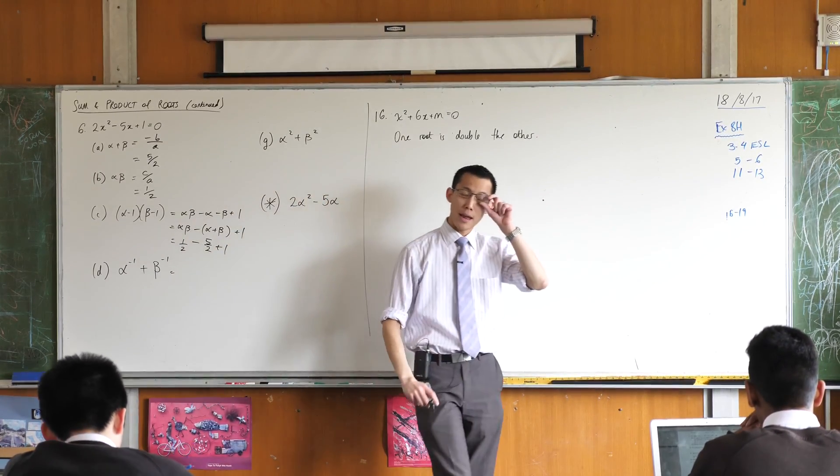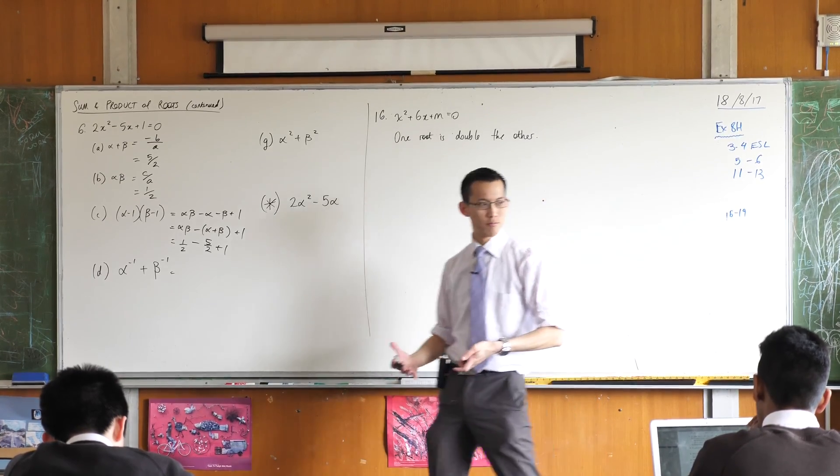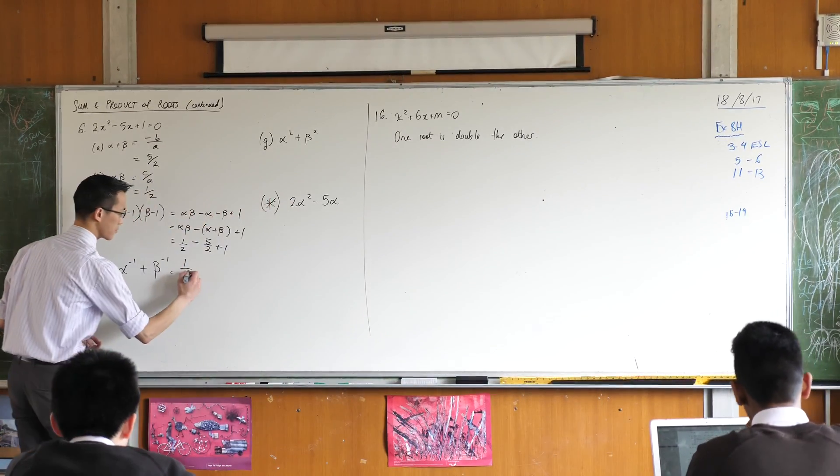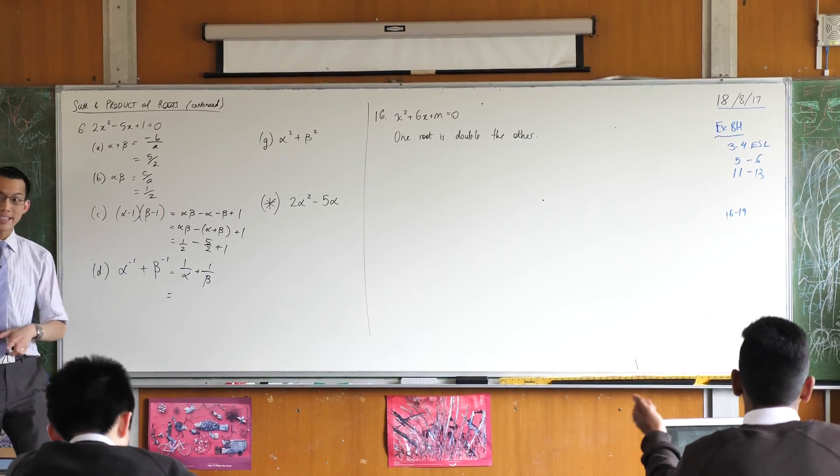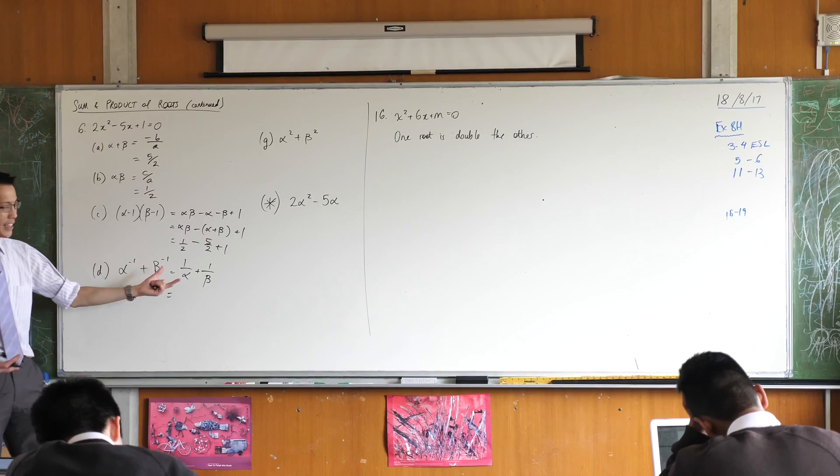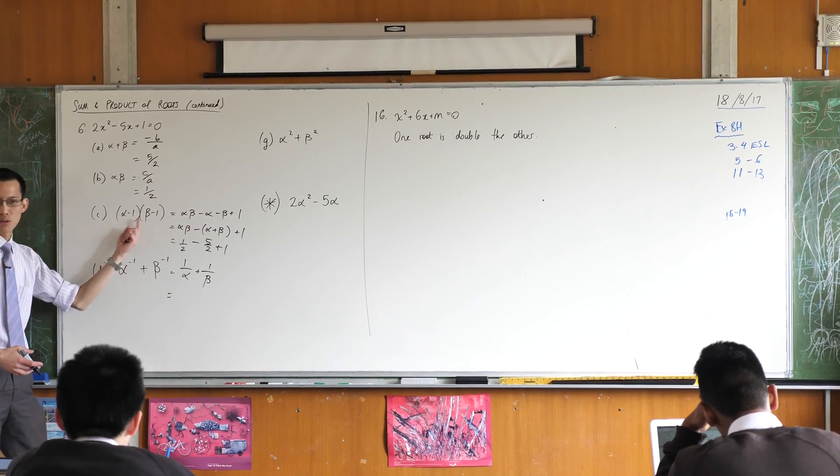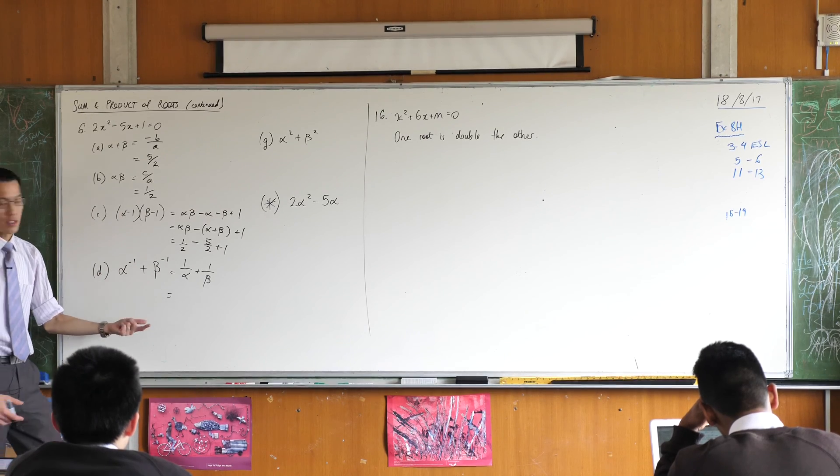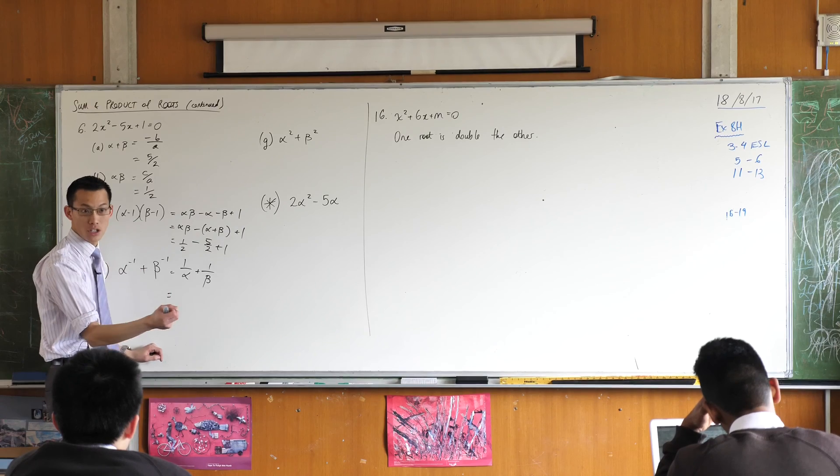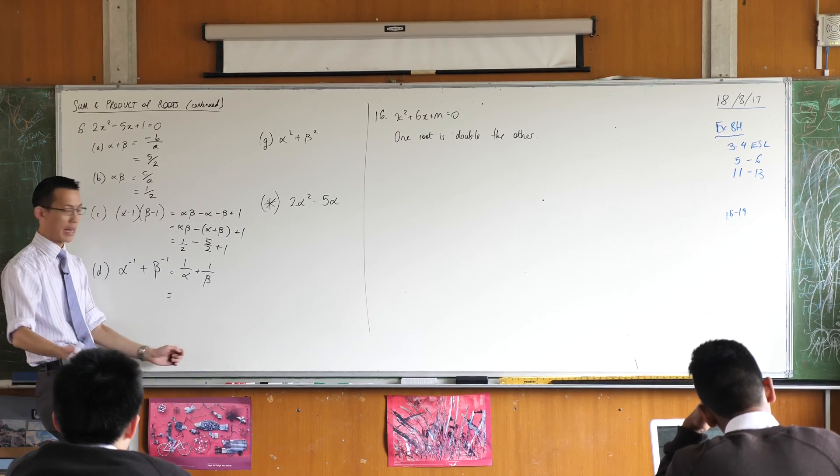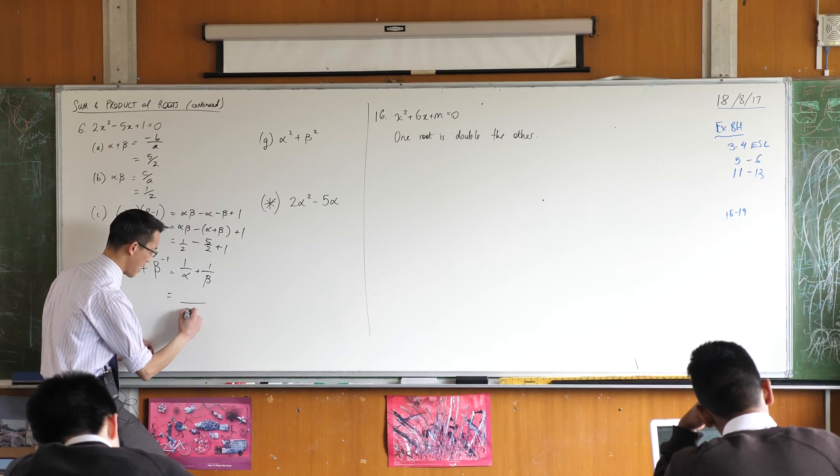Okay let's have a look at D. Now alpha to the negative one is just a fancy way of writing one on alpha. Same deal with the beta. So when you have a look at this again, thankfully doing the thing that we normally do with fractions just like the thing that we normally do with terms like this and expand is going to give us the results. If I put these two fractions on a common denominator like I do all the time when I'm adding fractions, what is that common denominator? Alpha beta.